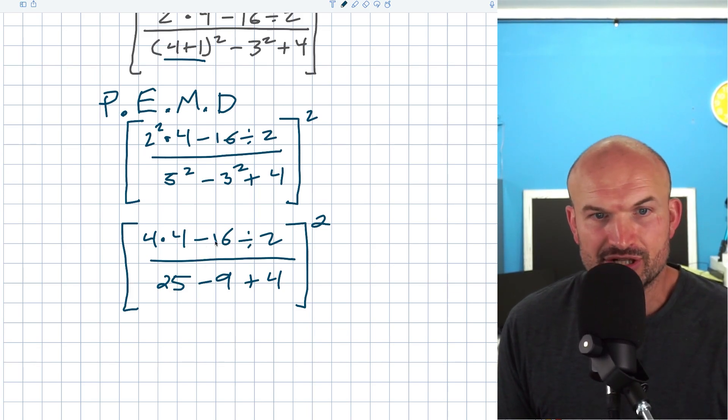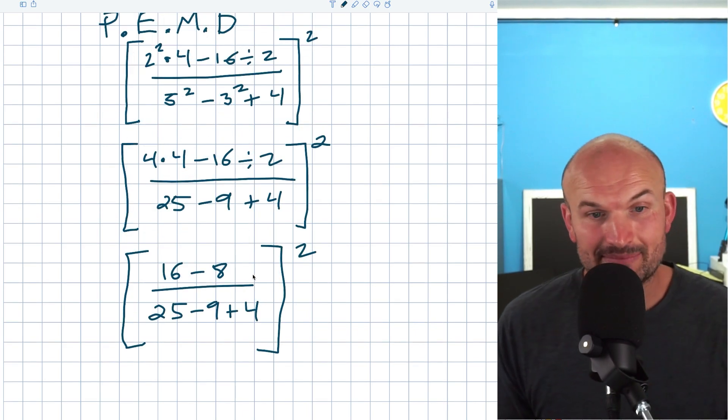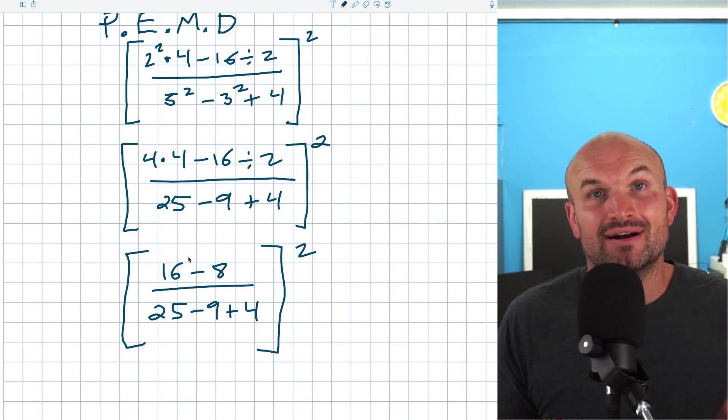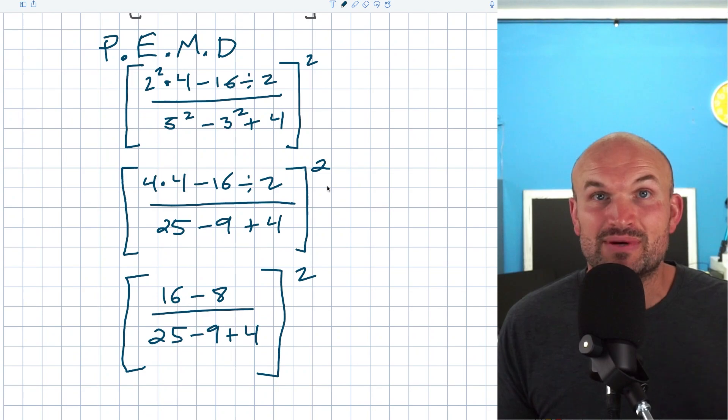Now, I only have multiplication and division in my numerator. And again, I'm just going to go from left to right. So I'm going to do a four times four, which is 16, and then a negative 16 divided by two, which is going to be a negative eight. And I know it's tempting for students who want to say, well, four divides into negative eight or four divides into 16. But no, just focus on simplifying the numerator and the denominator. And now, since we have eliminated the parentheses in the numerator and denominator, we've eliminated the exponents, eliminated the multiplication and division.